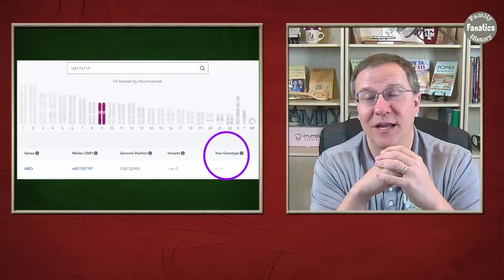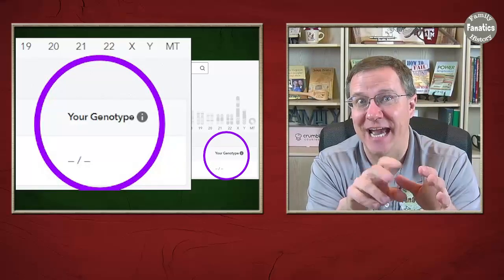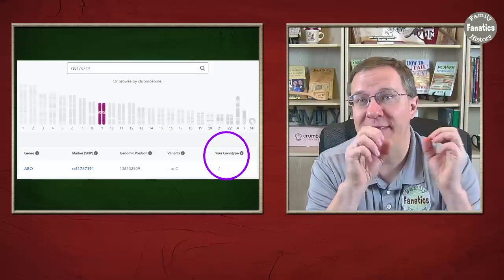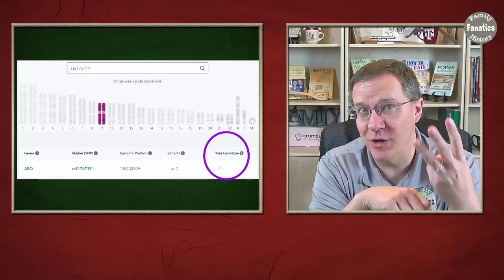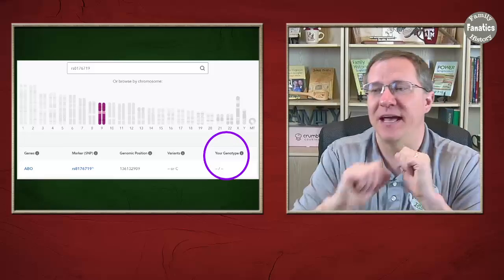Here is a third person. Same exact location. Their genotype is dash dash. So we have three different people at the exact same location that have three different genotypes, because genotypes are the exact letters at that location.